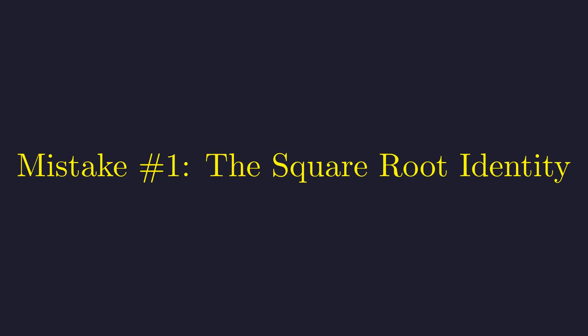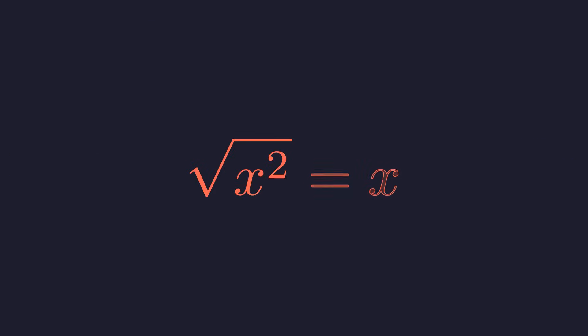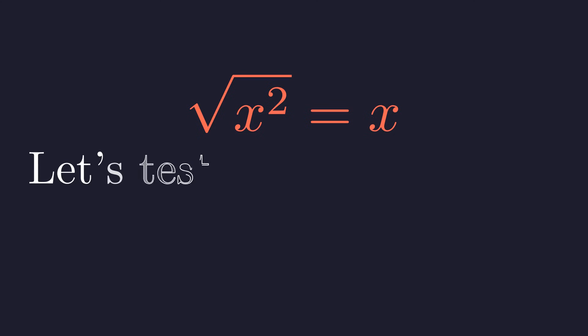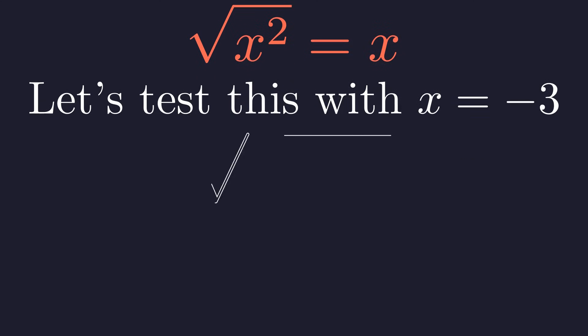Mistake number one: the square root identity. Most people instinctively believe that the square root of x squared is simply x. This seems correct, but it hides a subtle flaw. To see why it's wrong, let's test it with a negative number like x equals negative three. First we substitute negative three for x. We need to evaluate the square inside the root. Negative three squared is positive nine.